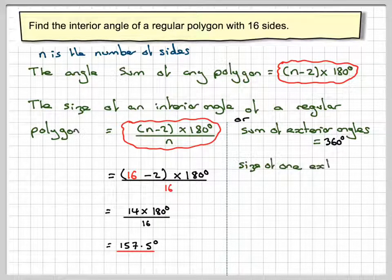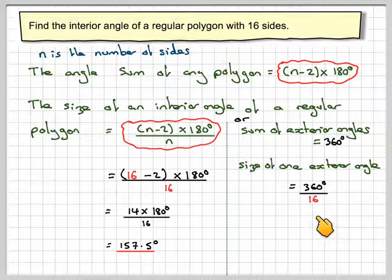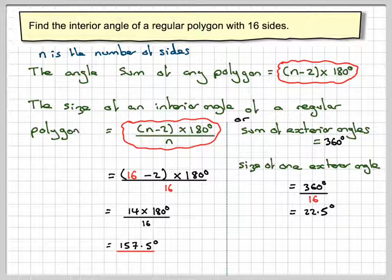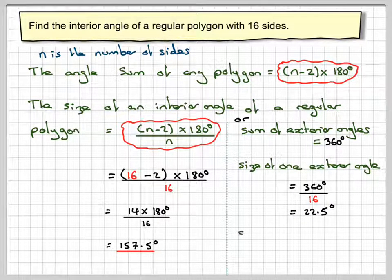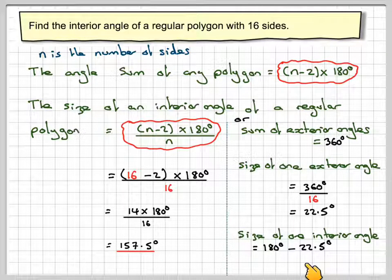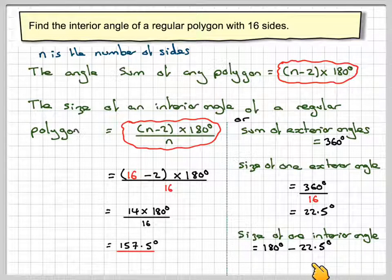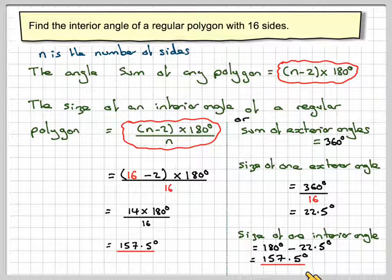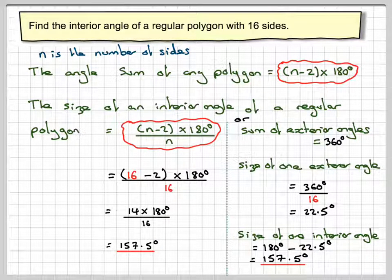The size of one exterior angle will then be 360 divided by 16 in this case, which is 22.5. And therefore, the size of one interior angle is going to be 180 minus 22.5, which again gives me 157.5. So here we have two methods of doing the same question.